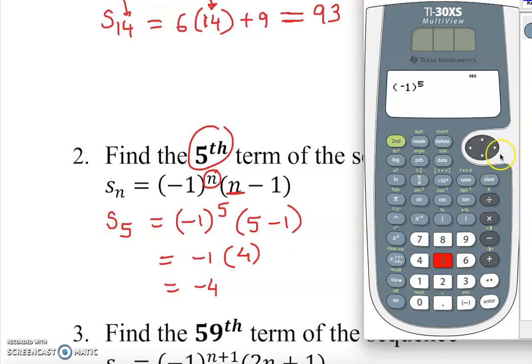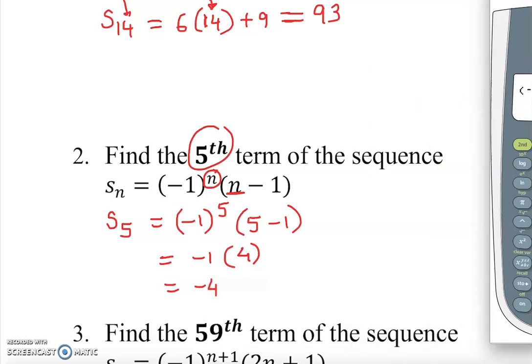Now I want to come down a little bit here because this one is down. That is an exponent. So the exponent is 5. Now come down and open parentheses. In this case, it's 5 minus 1, close parentheses, enter. Look, it's negative 4.